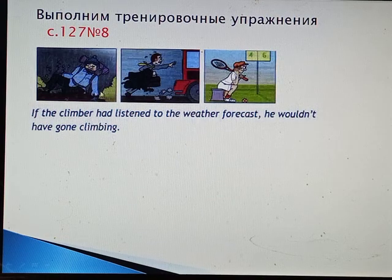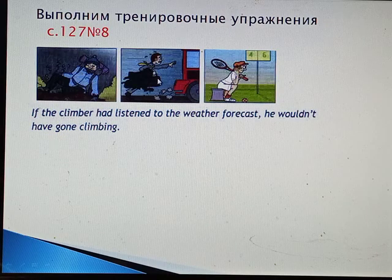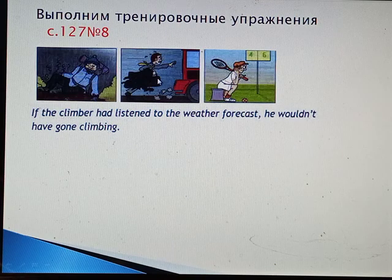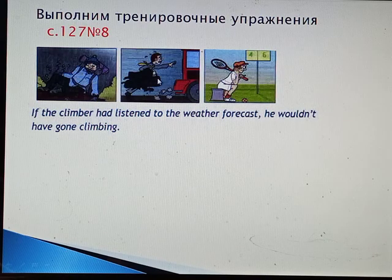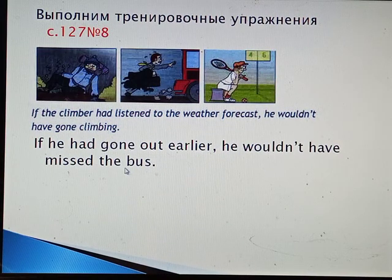Look at the second picture. The man is running up to a bus — он на него опоздал. А вышел бы из дома пораньше, он бы на него успел. Он может изменить ситуацию? Нет. Он теперь только может сожалеть. Построим предложение: If he had gone out earlier, he wouldn't have missed the bus. Вышел бы пораньше — не опоздал бы на автобус.